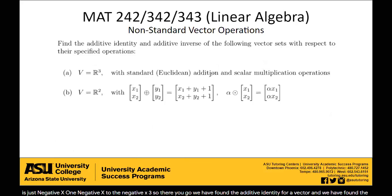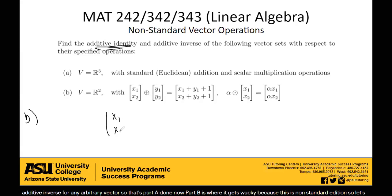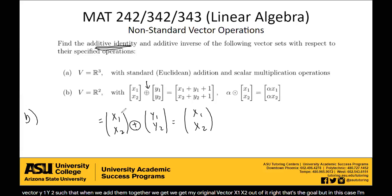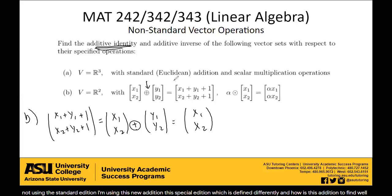Now Part B is where it gets wacky, because this is non-standard addition. We're going to try to find the additive identity. If we take a vector x1, x2, we're trying to find a vector y1, y2 such that when we add them together, we get x1, x2 back — that's the goal. But we're using this new special addition. How is it defined? x1, x2 plus y1, y2 gives x1 plus y1 plus 1, and x2 plus y2 plus 1.